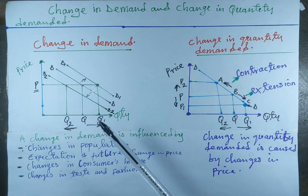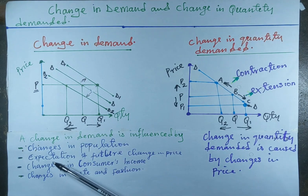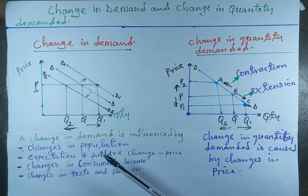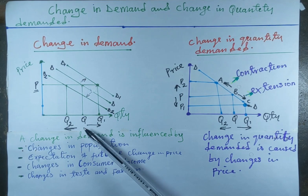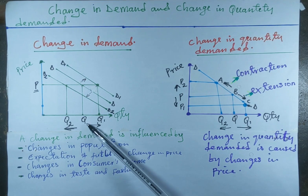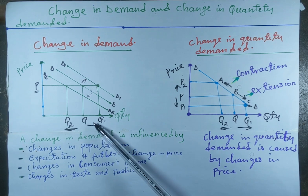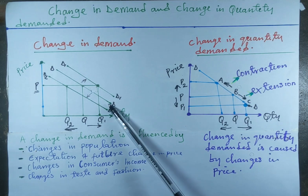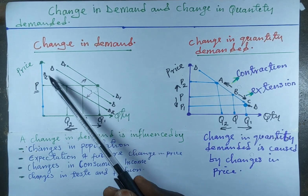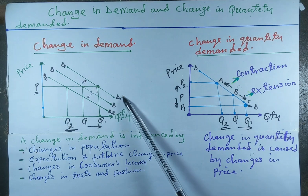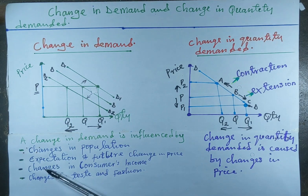In the case of future price expectations: when consumers expect a future rising price, they will buy more at the same price and the quantity demanded will increase from Q to Q1, causing the complete shift of the demand curve from DD to DD1.